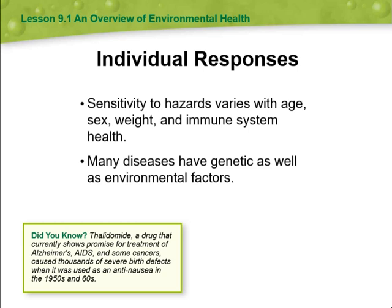Every person is different. In fact, two people can respond very differently to exactly the same hazard. For example, drinking from a contaminated well might make one person sick, while another person may not be affected. Therefore, while scientists try to understand how hazards affect human health, they cannot always predict with certainty how a hazard may affect a particular person.